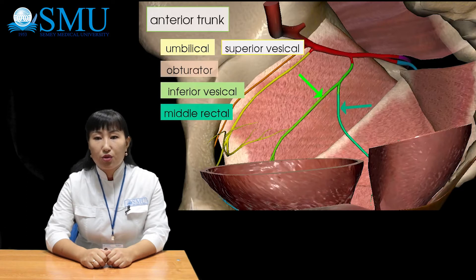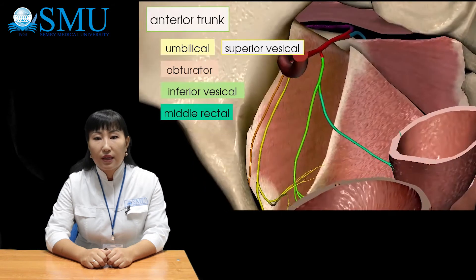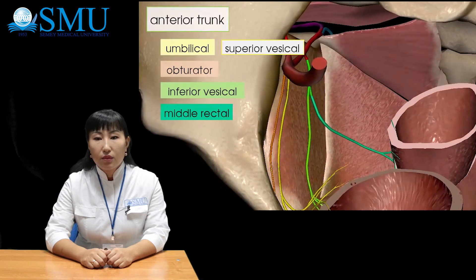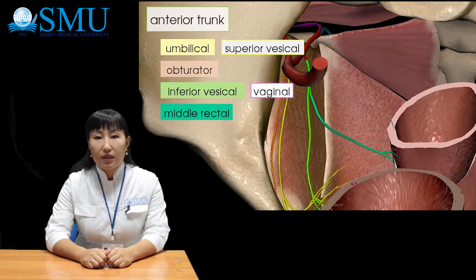The middle rectal artery goes to the rectum, vascularizing its middle section, and anastomoses with the superior and inferior rectal arteries. The vaginal artery supplies the vagina.